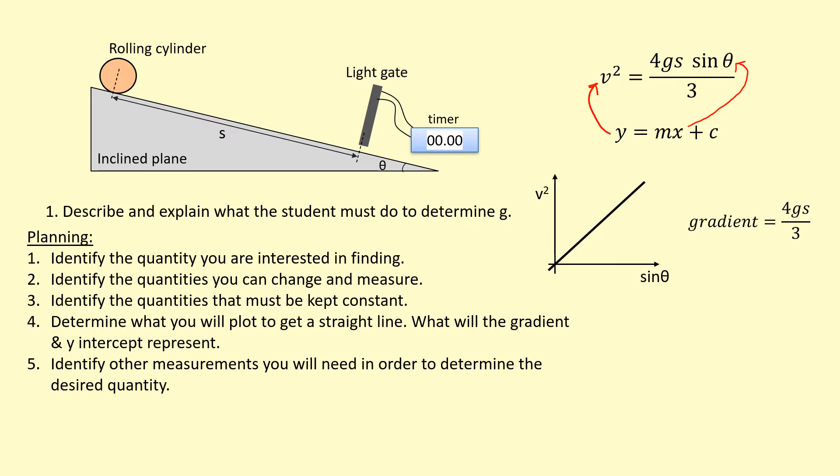Next, I'm going to think about other quantities I'll need in order to find G. Clearly, in this equation, I will need to find S. So that's another quantity that I'm going to have to measure. I'm going to use a ruler to measure S.